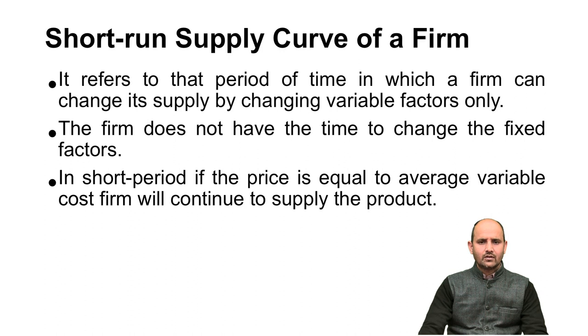If the price is equal to average variable cost, the firm will continue to supply the product. If price falls below average variable cost, the firm will decide to discontinue. If the firm is getting average variable cost, then the firm will continue to supply the product. So basically, short-run supply curve of a firm is the condition where the firm can change its supply by changing variable factors only.